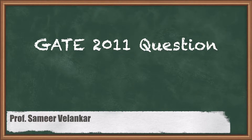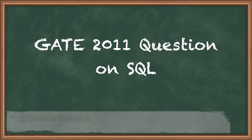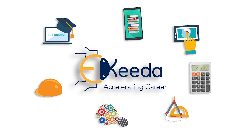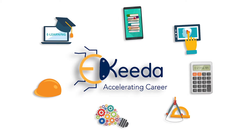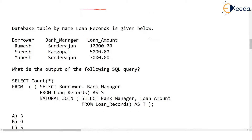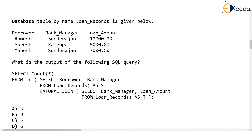Hello dear students. Let's see a GATE 2011 question asked on SQL. In this particular question we have been given a database table called loan records with three columns: borrower, bank manager, and loan amount. The question asks what is the output of the following SQL query.